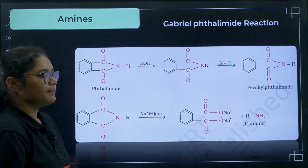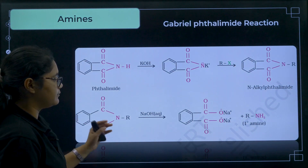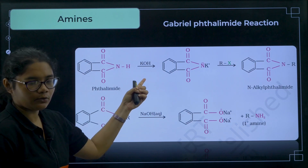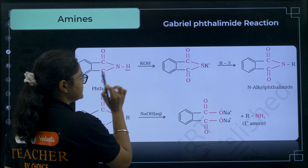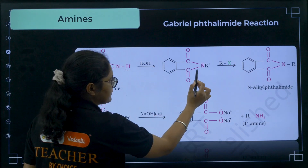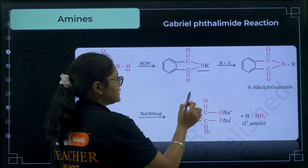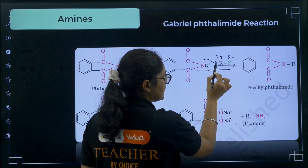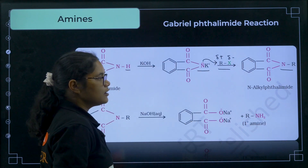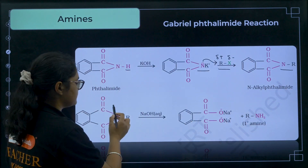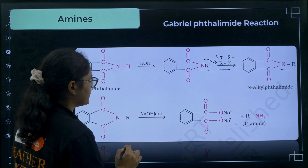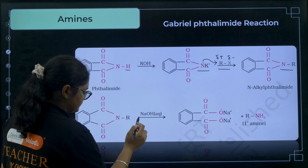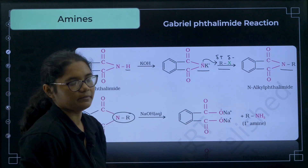From the chapter amines, the important reaction is the Gabriel phthalimide reaction. Starting with phthalimide, KOH (a base) abstracts H⁺ and gives the N⁻ potassium salt. On reaction with any R-X (where N is nucleophile, δ⁻, attacking the δ⁺ carbon of R-X), N-R is formed. Treating N-R with NaOH cleaves the bond, giving two COO⁻Na⁺ groups and converting the N-R group to a primary amine.